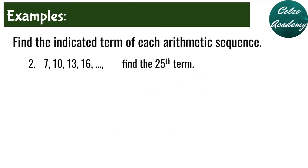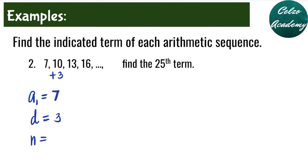Question number 2: given the arithmetic sequence 7, 10, 13, 16 and so on, find the 25th term. Our a sub 1 is 7, the first term. The common difference is 3 because the pattern is adding by 3 to find the next term, which you can verify by subtracting 10 minus 7, 13 minus 10, and 16 minus 13. Our n value is 25 because we were asked to find the 25th term.